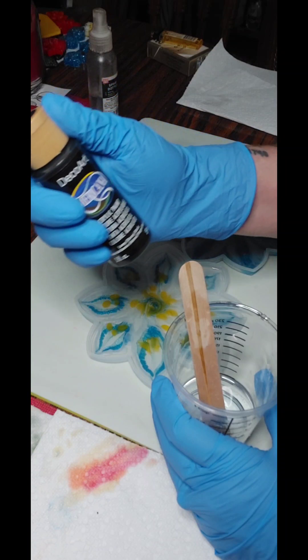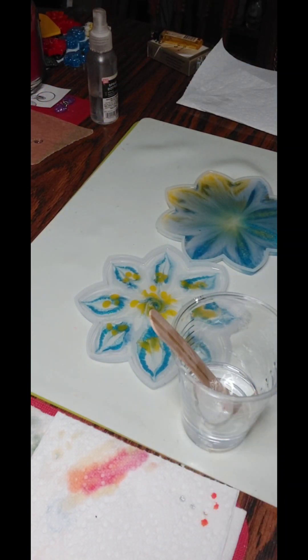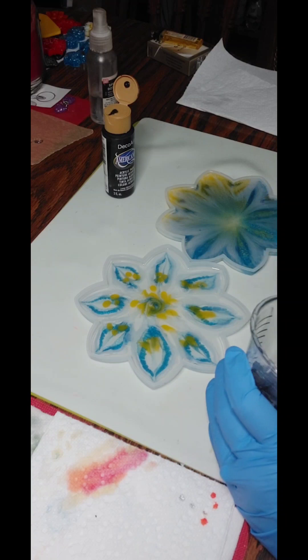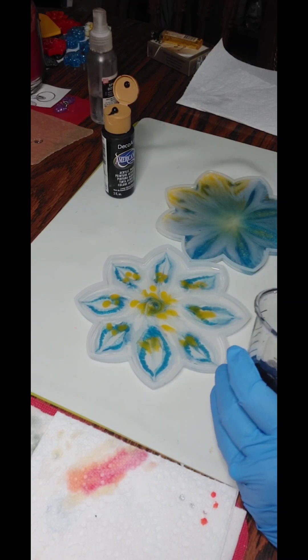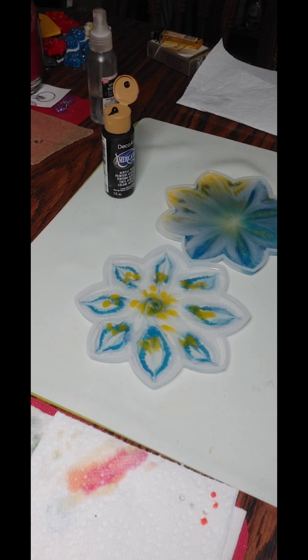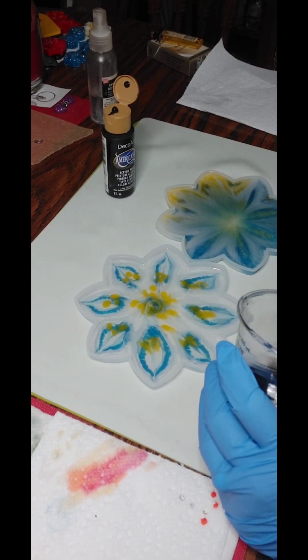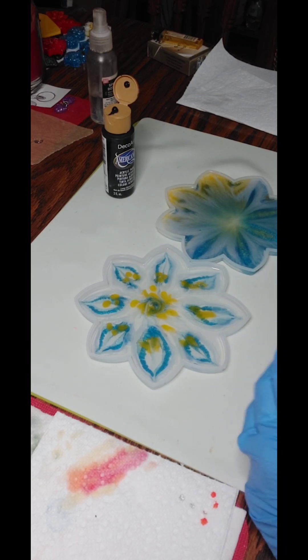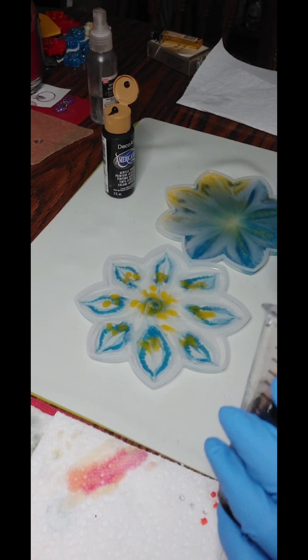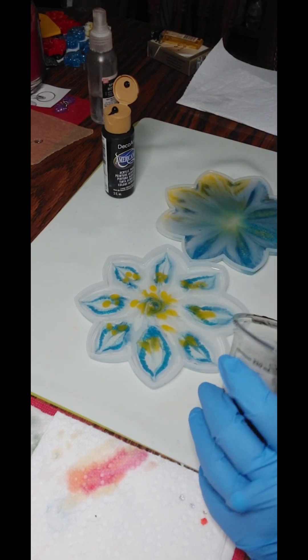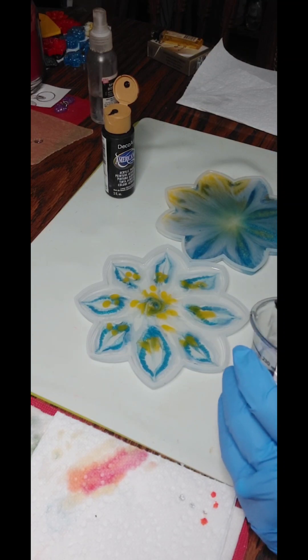And I'm going to mix up my black. I'm just using this DecoArt acrylic paint. It makes a really shiny black. I have not made a decent bloom in a very long time, and I don't know why. I think it's because the air runs so cold in here, and you know my resin heats up. By the time I'm done pouring it, it's cold again.